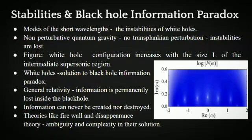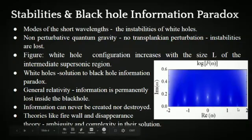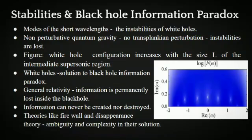The modes of short wavelength are exponentially blue-shifted along the horizons of the white holes, indicating instabilities of the white holes. Eugenio Bianchi and his colleagues in their papers suggest an approach using non-trans-Planckian quantum gravity without violating known processes. Considering the no-trans-Planckian perturbations, all the instabilities lose their existence. The figure displays the number of discrete instabilities in the black hole–white hole configuration increasing with the size L of the intermediate region. These white holes can provide an acceptable solution to the information paradox which has persisted since Hawking proposed black hole evaporation.